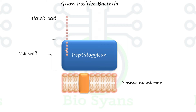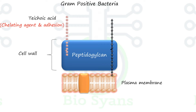Teichoic acids are linear polymers of glycerol and ribitol joined by phosphate and a few amino acids and sugars. Although their functions are not fully known, they are believed to serve as a chelating agent and a means of adherence for bacteria. The teichoic acid polymers are occasionally anchored to the plasma membrane, and in that case they are called lipoteichoic acid.